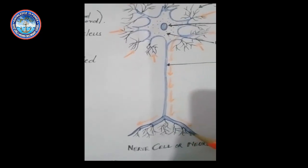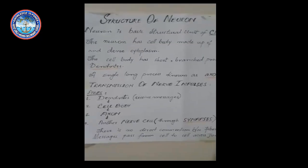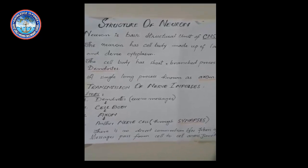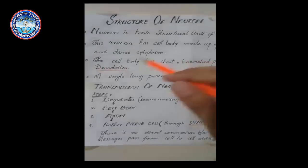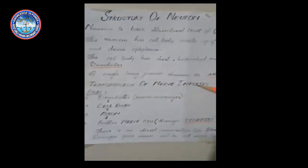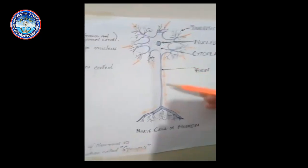The function of the neuron is to transmit nerve impulses. Now how does the transmission of nerve impulses take place by this neuron? Let's see the steps.